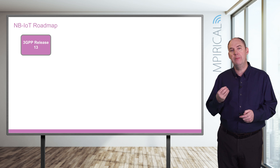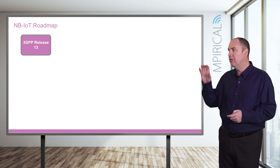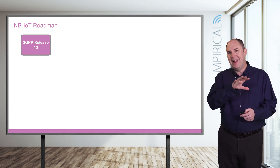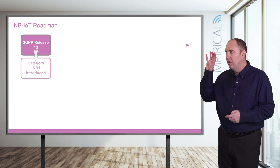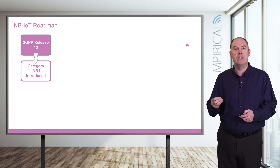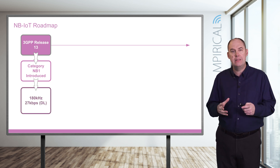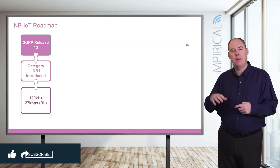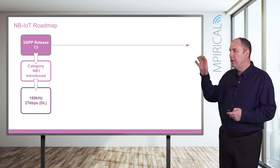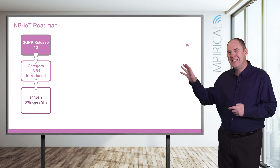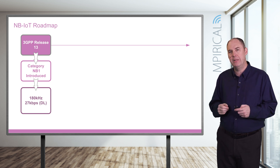In terms of the 3GPP releases of Narrowband IoT, we can start at Release 13. Remember LTE was initially added at Release 8, and at Release 13 we introduced the first category of Narrowband IoT device referred to as NB1, or Narrowband Category 1. That provided certain capabilities — you can discuss data rates of IoT, but you've got to be mindful that you might be looking at peak data rates, and with multiple devices sharing the resource the actual data rate isn't very large: 27 kilobits per second in the downlink, utilizing 180 kilohertz as a channel.